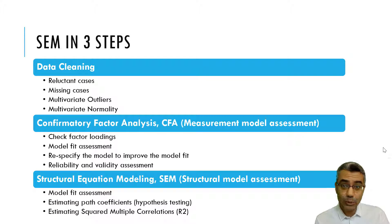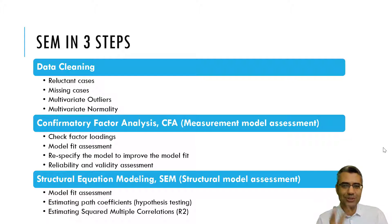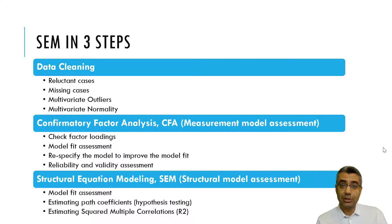Once your data is prepared, we go for CFA, or confirmatory factor analysis — another name for this is measurement model assessment. We check whether the constructs and items included in the model are good. First, we run the model, then we assess the factor loadings, then we assess the model fit and try to improve it by making changes in the measurement model.